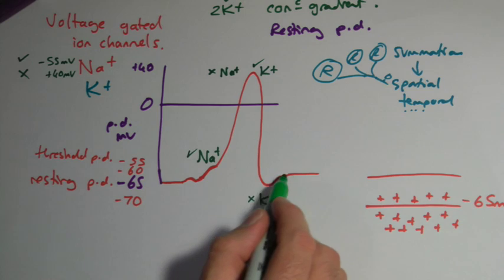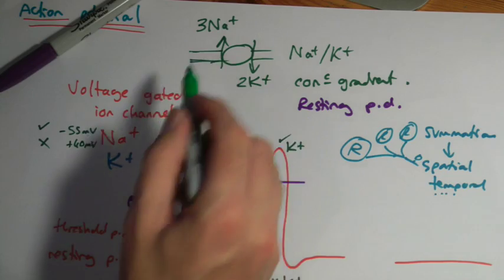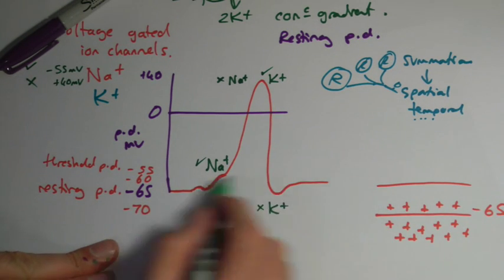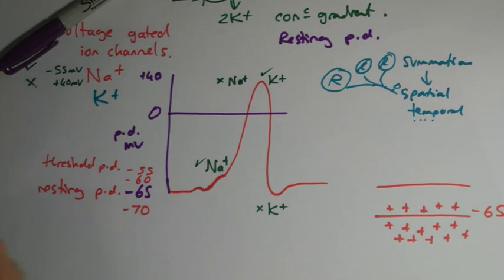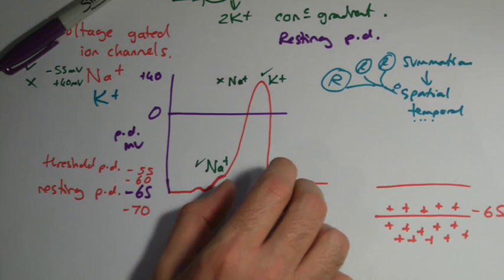And here, what's happening is our neuron is being reset using this sodium-potassium pump, which, remember, just stayed there doing its stuff all the way through. Now, this whole process takes, you know, we're looking in terms of milliseconds, I think it's about maybe about three milliseconds for that whole thing.